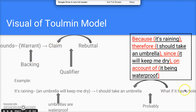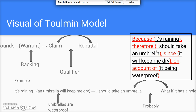A really good argument also has a rebuttal: what if the umbrella has a hole? Well then, probably it will keep me dry — that becomes the qualifier, capturing the extent to which the claim is true. In sentence format: 'Because it's raining [grounds], therefore I should take an umbrella [claim], since it will keep me dry [warrant], on account of it being waterproof [backing].'